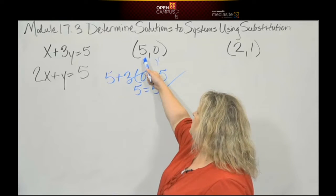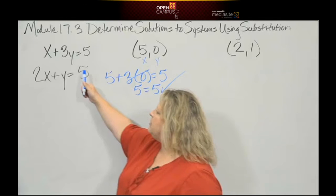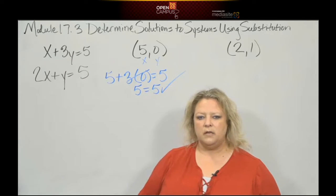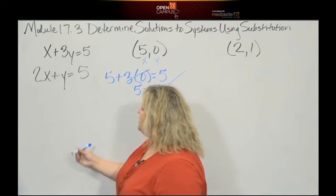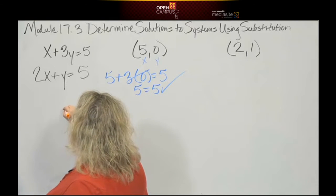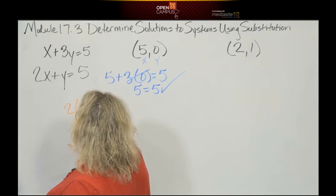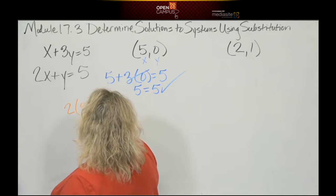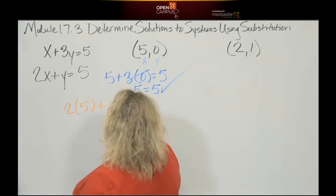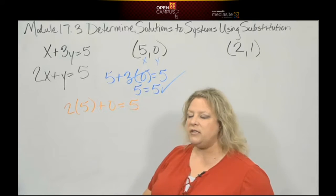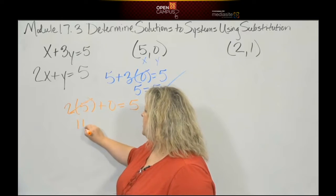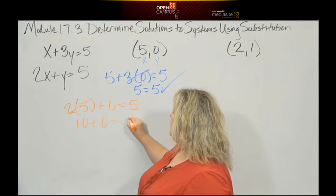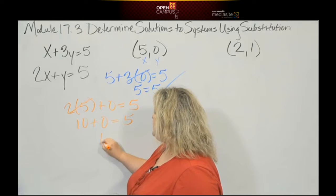Let's see if it's a solution for the other equation. Let's plug it in: 2x—x is 5—plus y—y is 0—equals 5. Doing evaluation, I do multiplication first: 2 times 5 is 10. Ten plus zero... uh-oh, ten plus zero is ten.